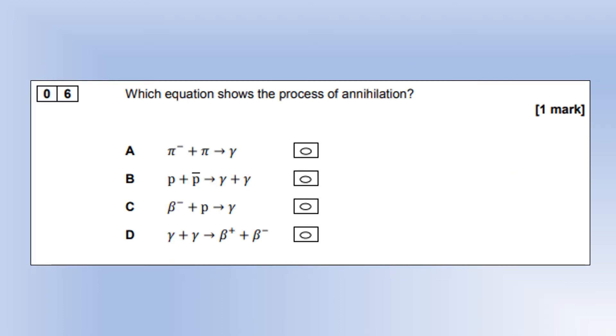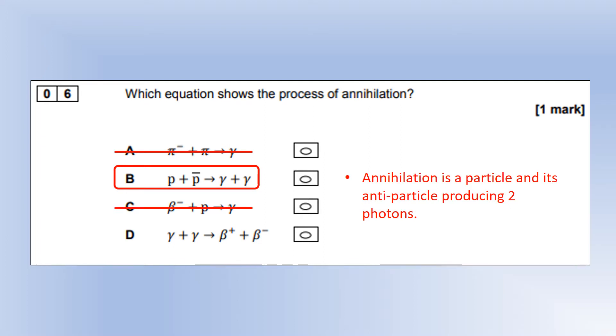Which equation shows the process of annihilation? Annihilation is a particle and its antiparticle producing two photons. Option A, the antiparticle of pi minus is pi plus, so that's not it and it's not producing two photons. Option B, we've got a proton and an antiproton making two photons, so that works. Option C, a proton and electron are not antiparticles. And D is some form of pair production, not annihilation.